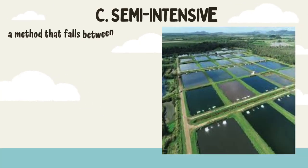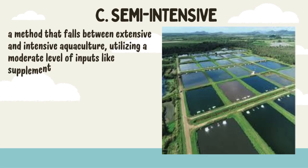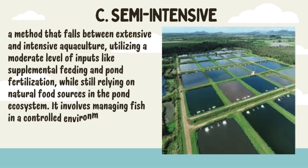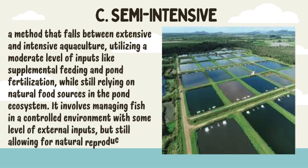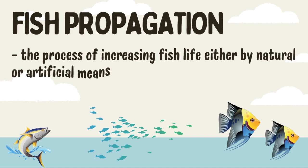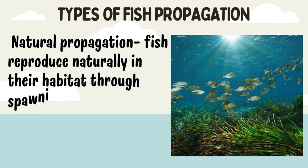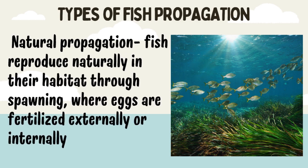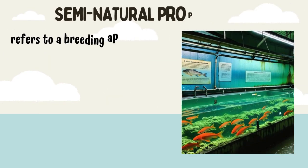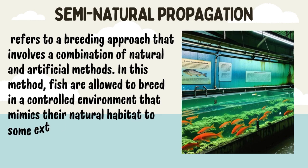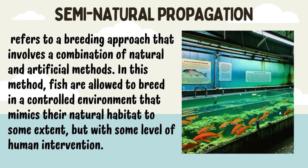C. Semi-intensive: a method that falls between extensive and intensive aquaculture, utilizing a moderate level of inputs like supplemental feeding and pond fertilization, while still relying on natural food sources in the pond ecosystem. It involves managing fish in a controlled environment with some level of external inputs, but still allowing for natural reproduction and feeding habits. Fish Propagation: the process of increasing fish life either by natural or artificial means of reproduction. Fish may be allowed to mature and multiply by themselves. Types of Fish Propagation — Natural Propagation: fish reproduce naturally in their habitat through spawning, where eggs are fertilized externally or internally. Semi-natural Propagation: a breeding approach that combines natural and artificial methods, where fish are allowed to breed in a controlled environment that mimics their natural habitat to some extent, but with some level of human intervention.